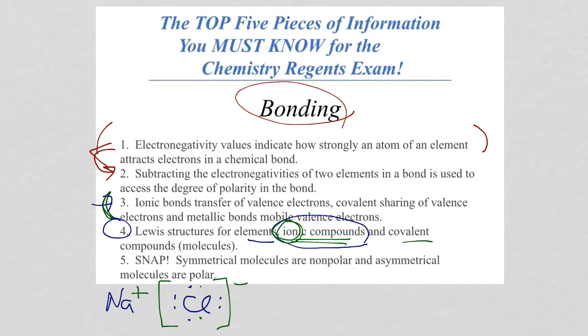For covalent compounds, better known as molecules, now you're dealing with clusters of atoms that are bonded together. This also ties into number five, which is symmetrical molecules being non-polar and asymmetric being polar. So, let's take a look at covalent compounds and polar and non-polar on the next page.